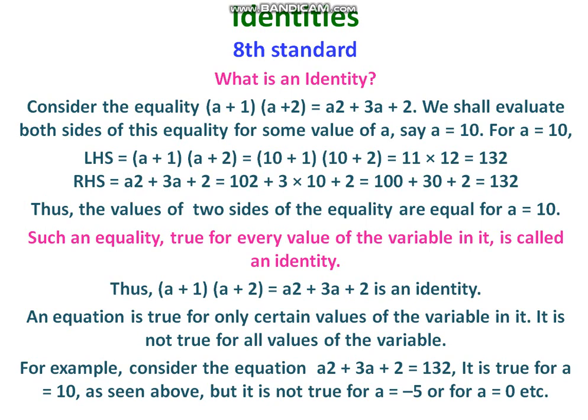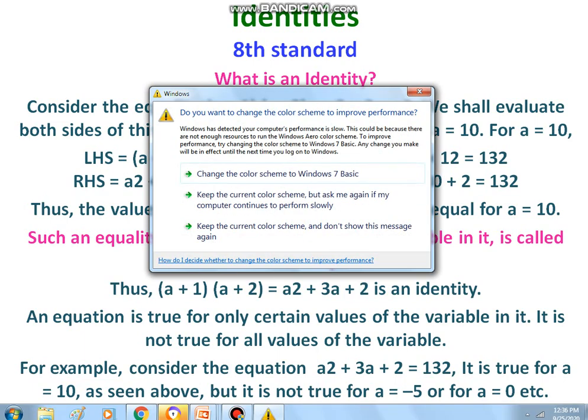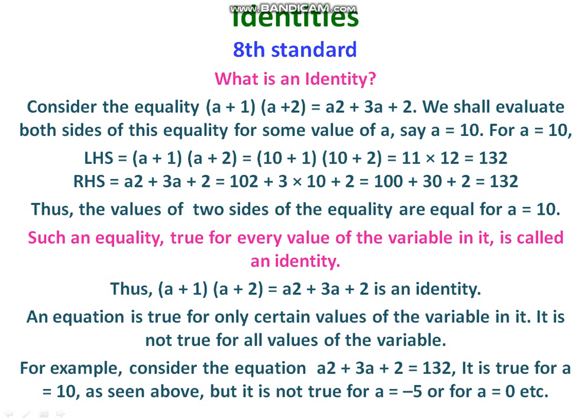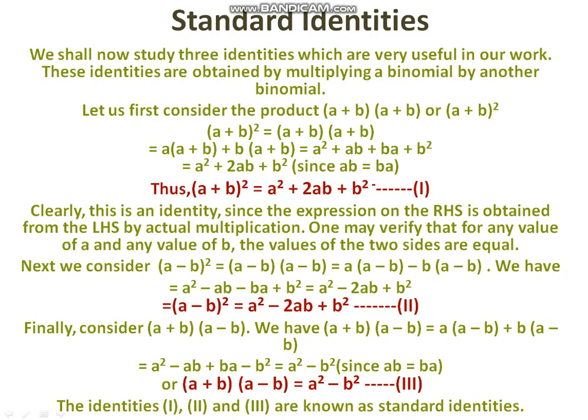Therefore, (a plus 1) into (a plus 2) equals a squared plus 3a plus 2 is an identity. An equation, on the other hand, is true for only certain values of the variable — it is not true for all values. For example, a squared plus 3a plus 2 equals 132 is true for a equals 10, but not for a equals minus 5 or a equals 0.